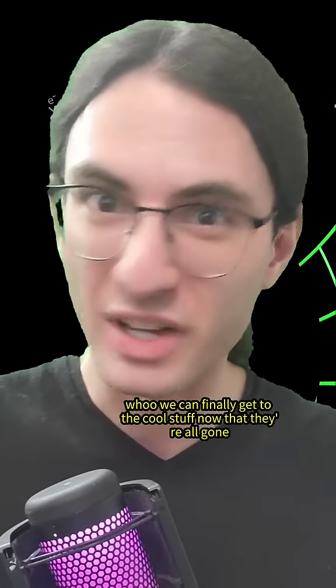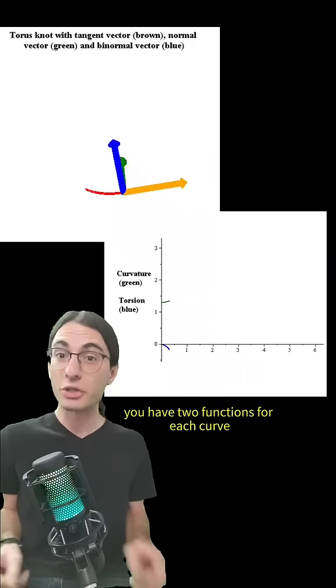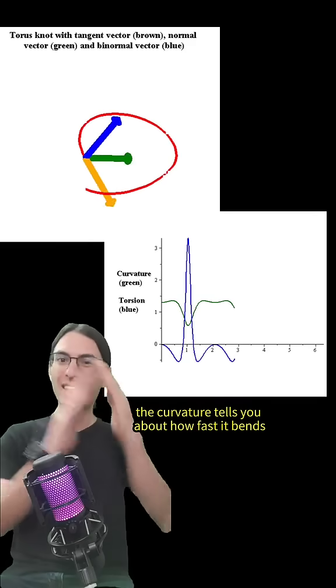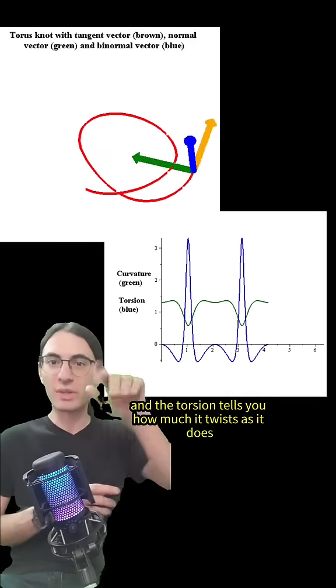Woo! We can finally get to the cool stuff now that they're all gone. So now you have two functions for each curve that tell you stuff about said curves. The curvature tells you about how fast it bends, and the torsion tells you how much it twists as it does so.